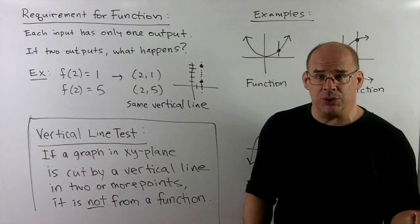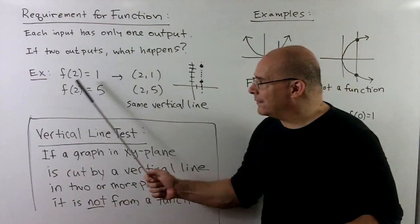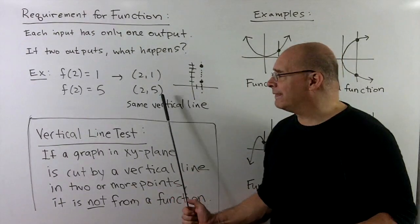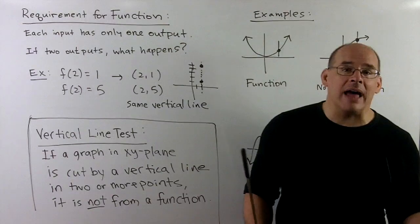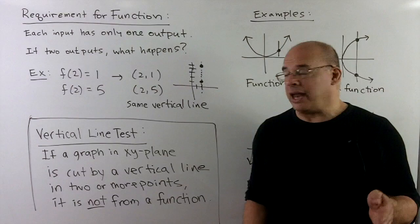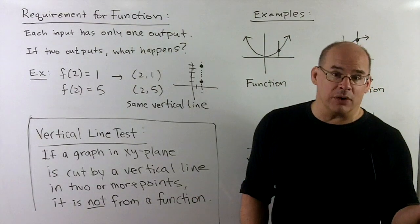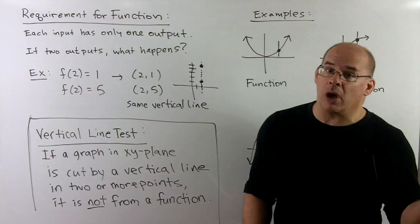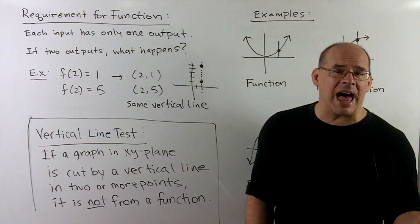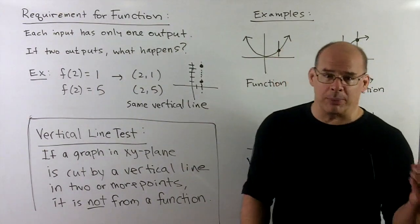To see what goes wrong, let's consider what happens when we have two outputs. I have f(2) equal to 1, f(2) equal to 5. They translate into the points 2 comma 1, 2 comma 5. And if we plot those, we're going to get these points here, which live on the same vertical line. That's exactly what we check to see if a graph represents a function.